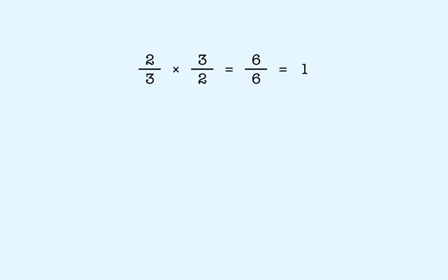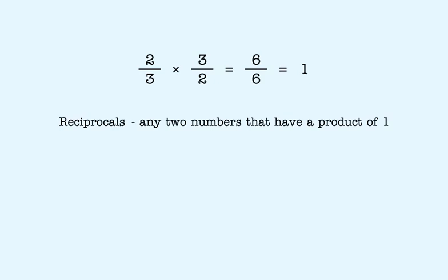When the product of two numbers is one, the numbers are called reciprocals of each other. Reciprocals are any pair of numbers that have a product of one. We say that two-thirds is the reciprocal of three-halves, and three-halves is the reciprocal of two-thirds.